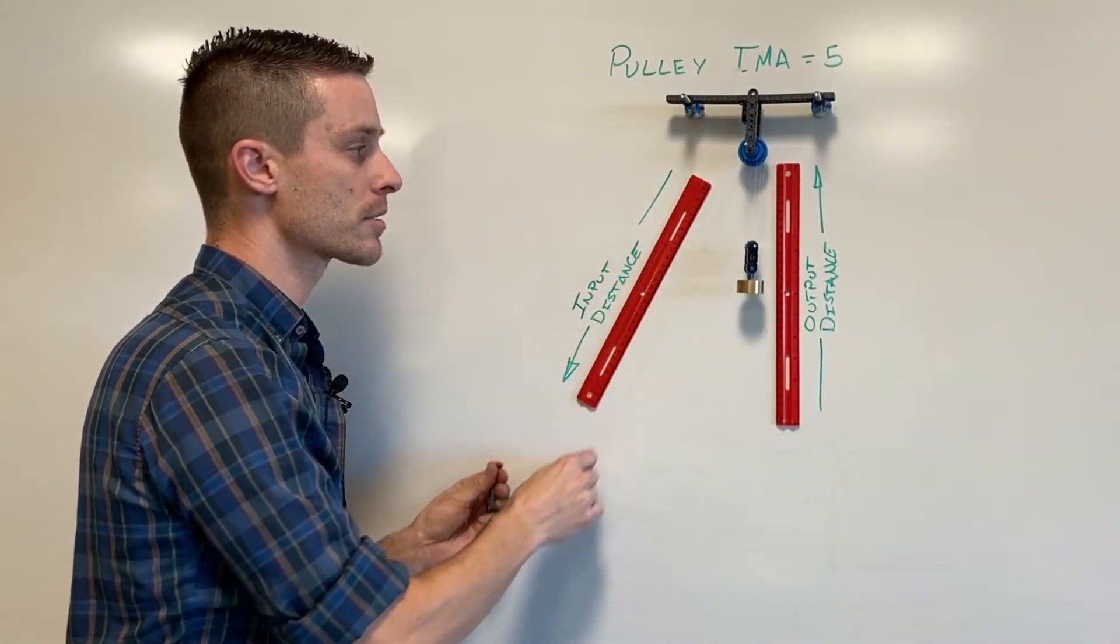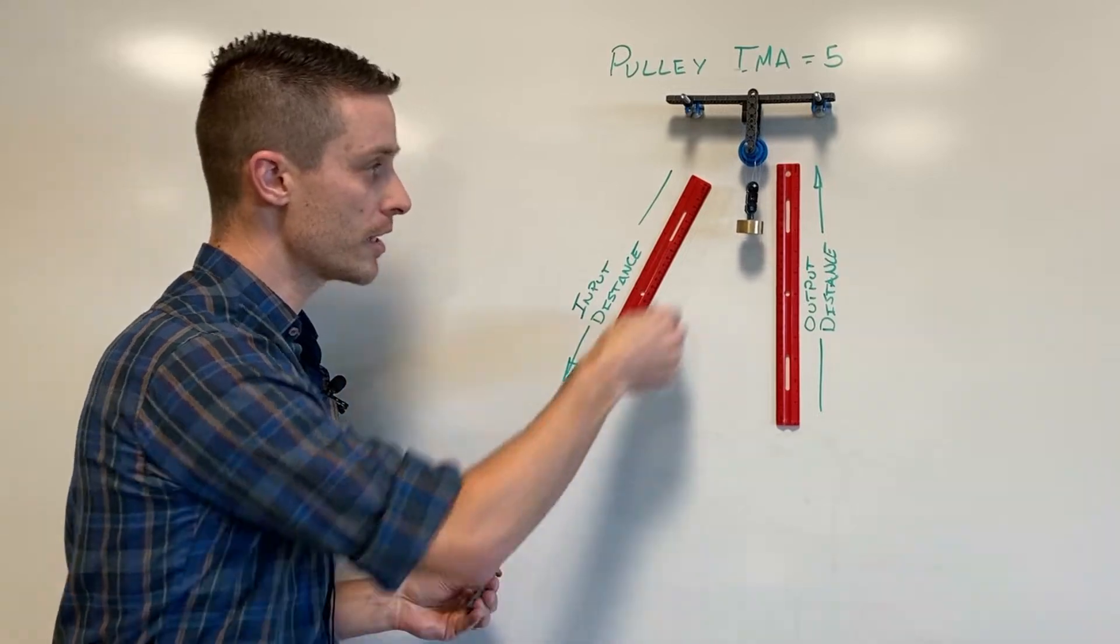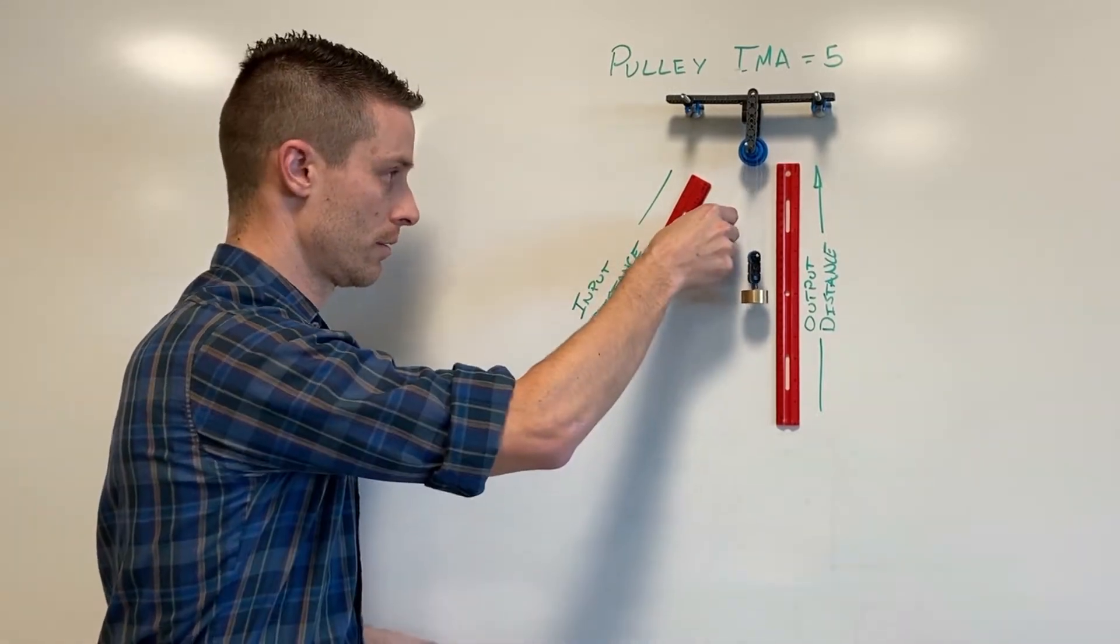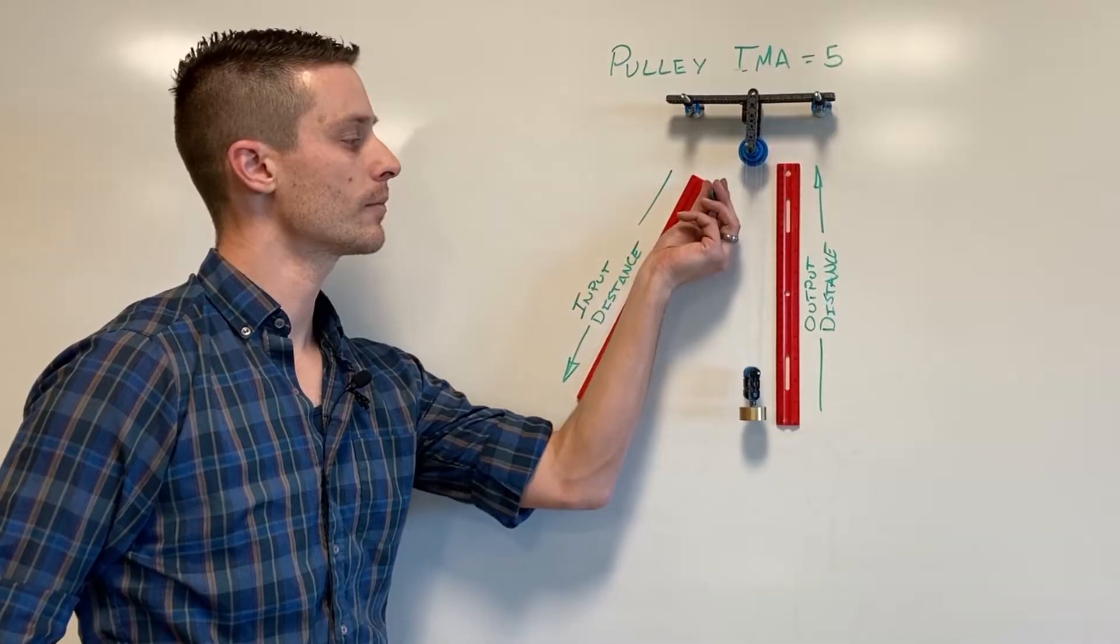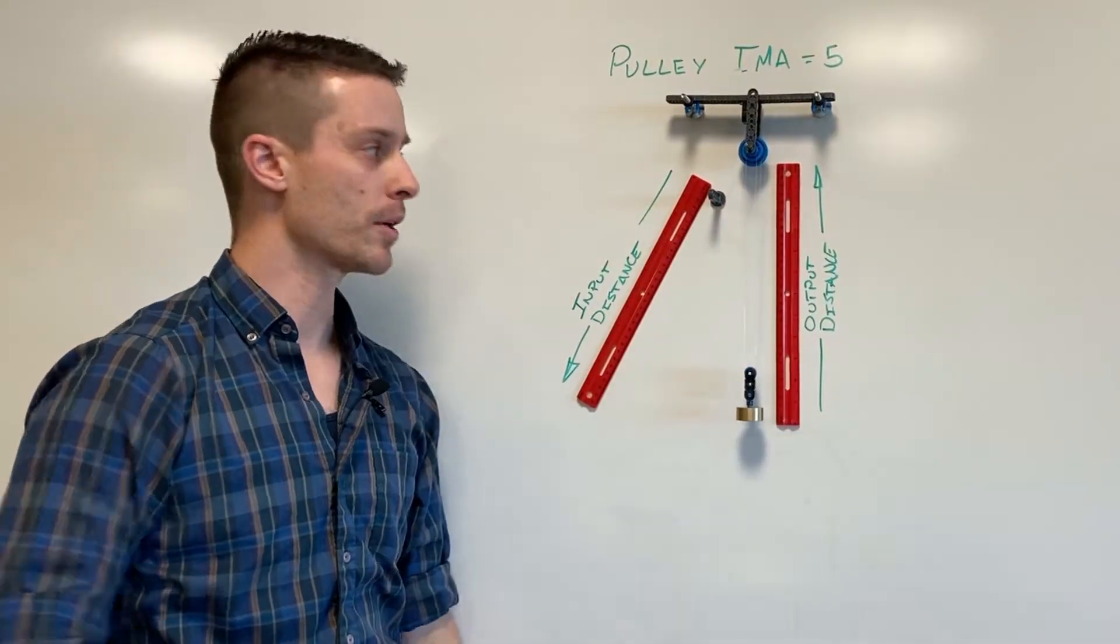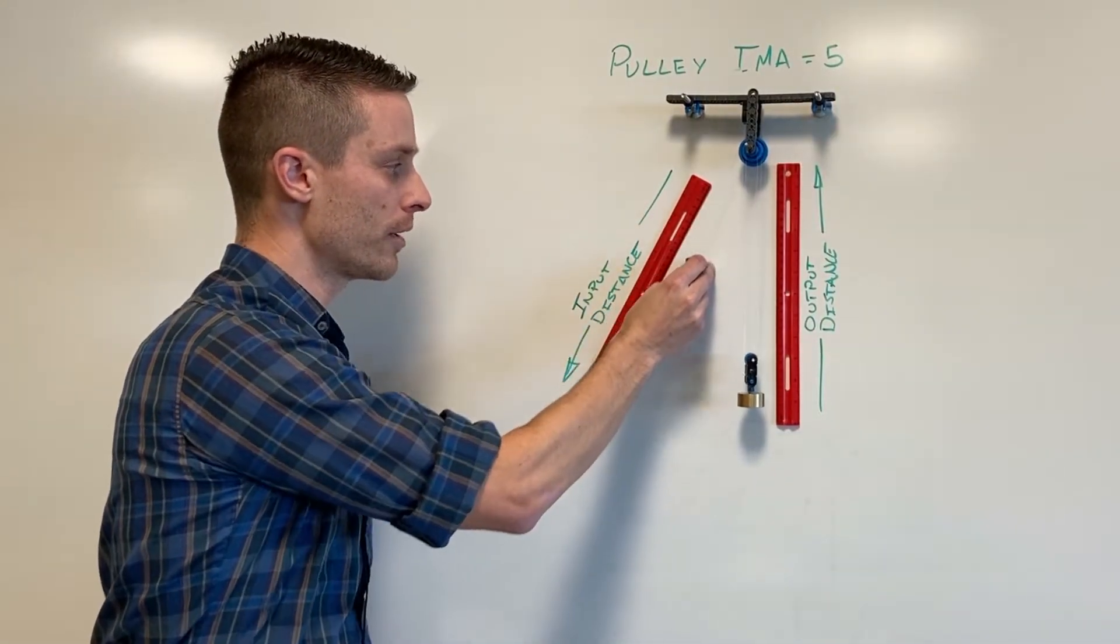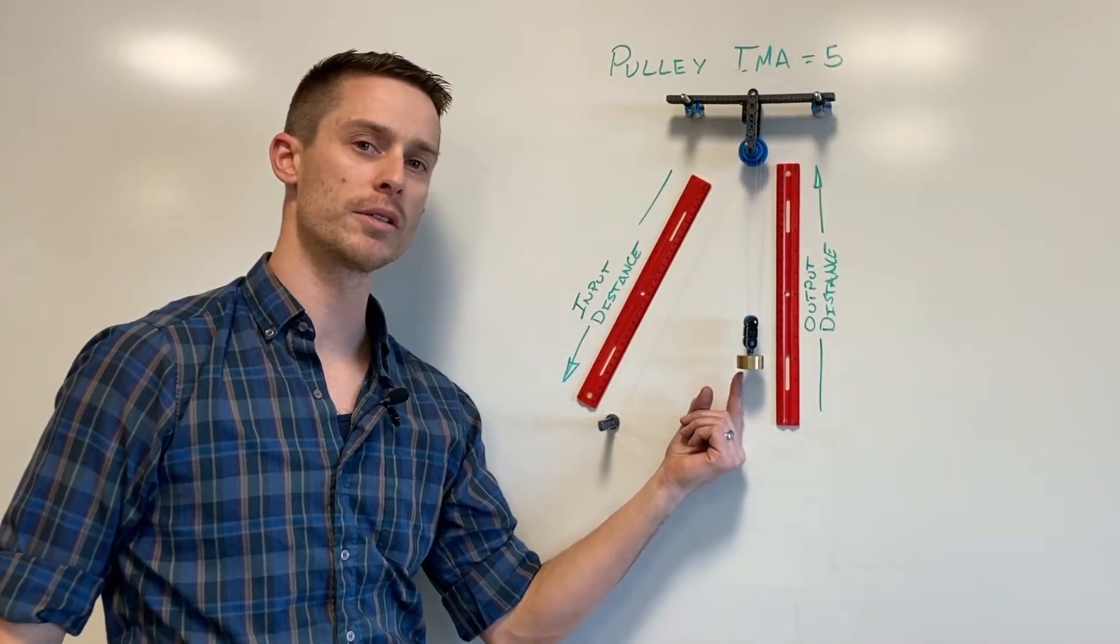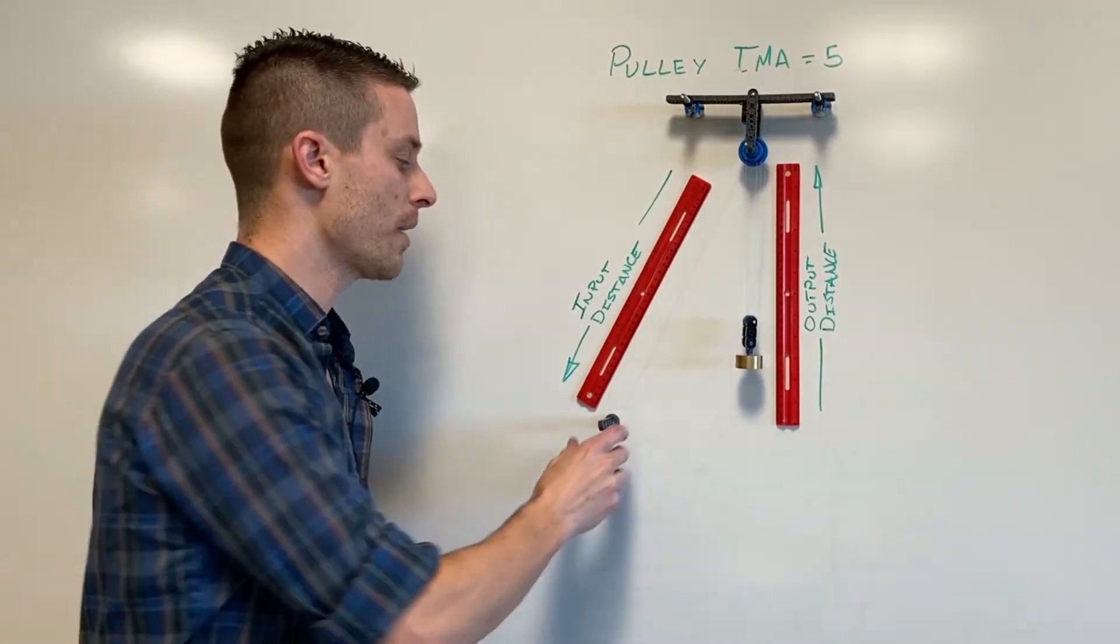I could keep pulling this and you'll see it's all just one thin strand. Now you might have noticed as I pull on this input end of the strand the load doesn't move nearly as far and there's a reason behind that.